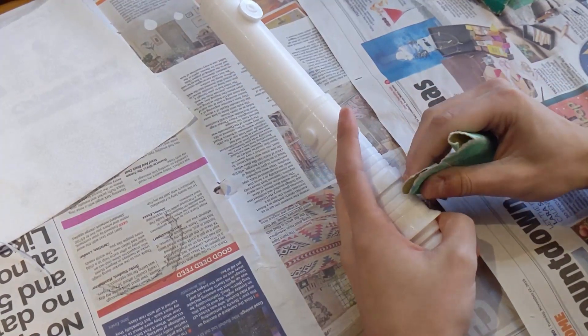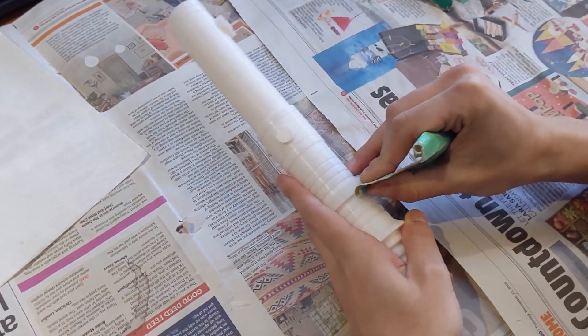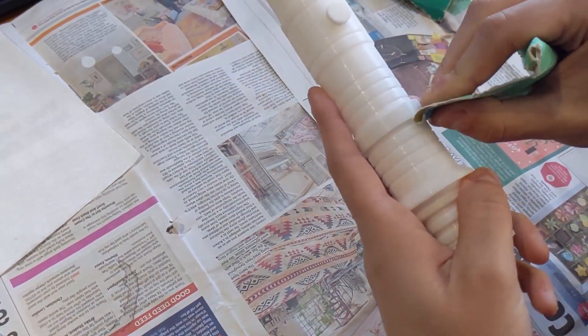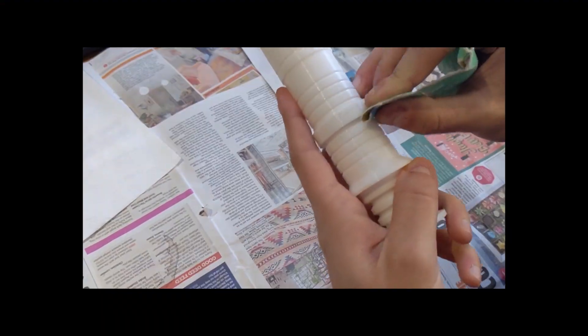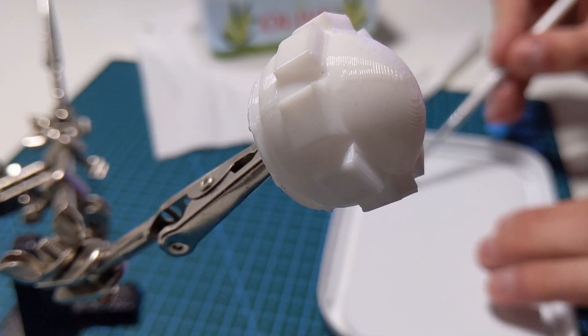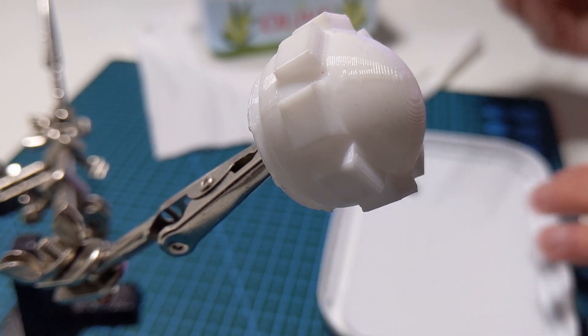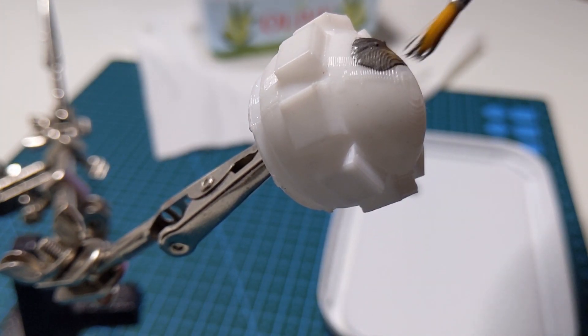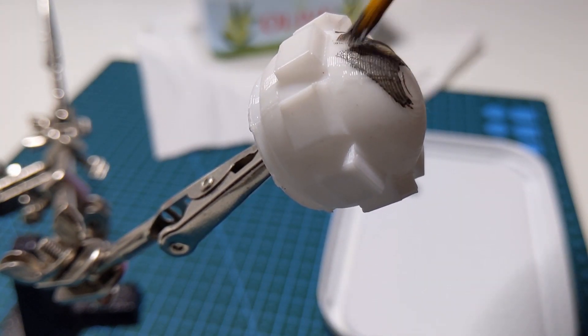Now that we've got the lightsaber as a whole, we can start painting. Again, I really do recommend painting the lightsaber before assembly, but here we are. You live and you learn, I guess. This little part here wouldn't fit into the lightsaber since my printer made the peg slightly too big for the hole, so I painted it separately.